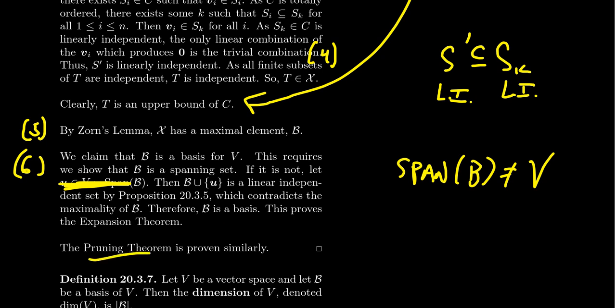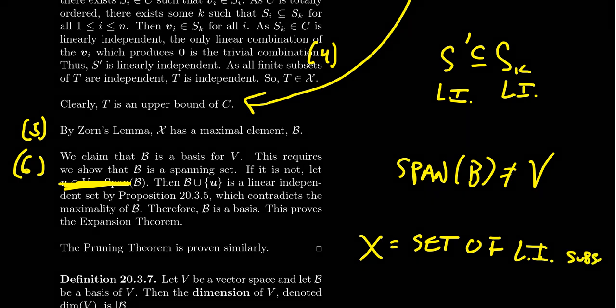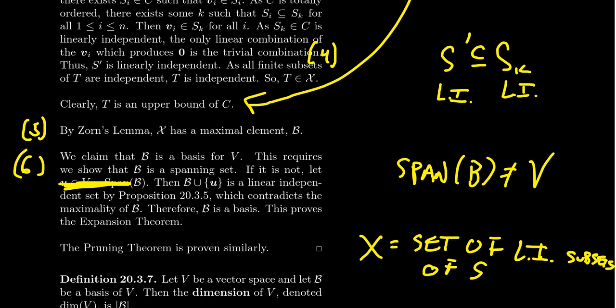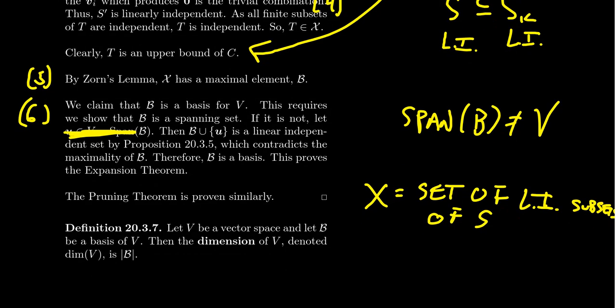I'll leave it as an exercise to the viewer to prove the pruning theorem. As a hint, it's the same basic argument: let S be an arbitrary spanning set of V, let X be the set of linearly independent subsets of S ordered by set containment, and then using the same template steps one through six, argue that there must exist a maximal element, which would then be a basis by a similar argument.